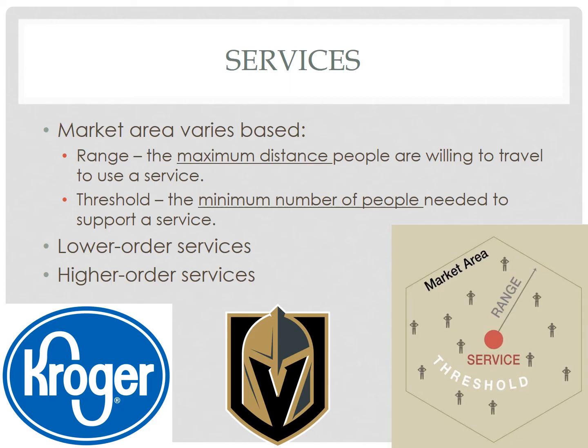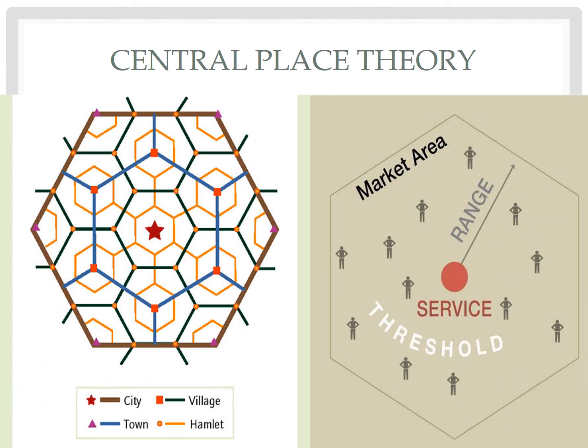Going back to central place theory, Christaller argued that the smallest settlements would be very numerous and situated relatively close together because they offered lower order services that didn't need many people. Larger settlements would be fewer and farther apart so as not to interfere with the thresholds of the higher order services that clustered there.